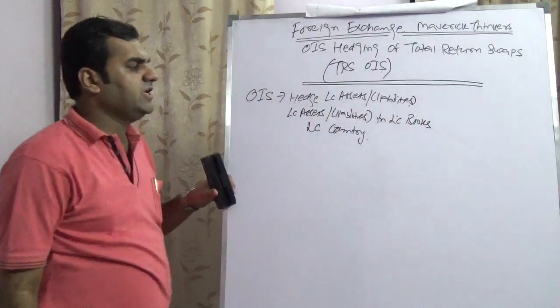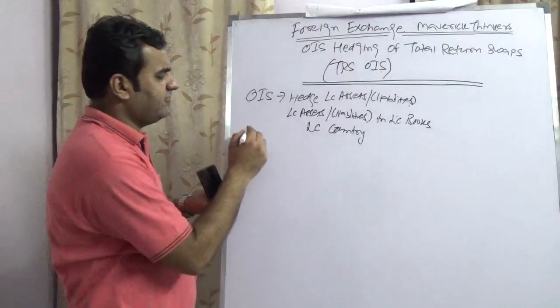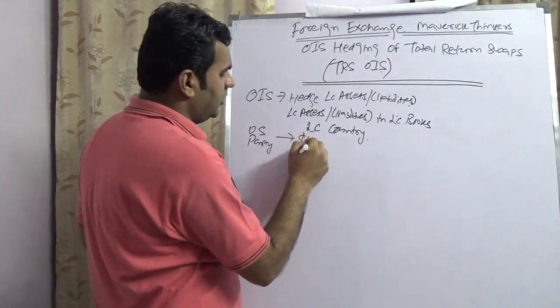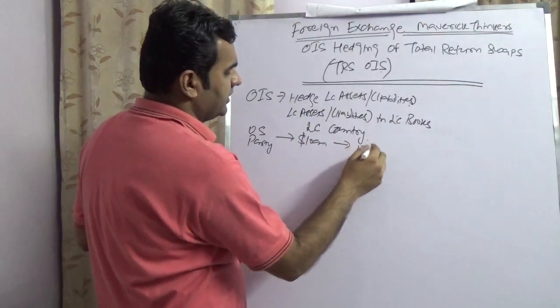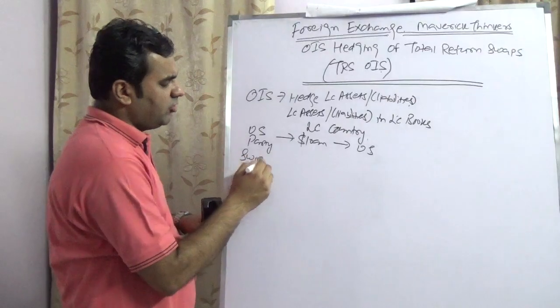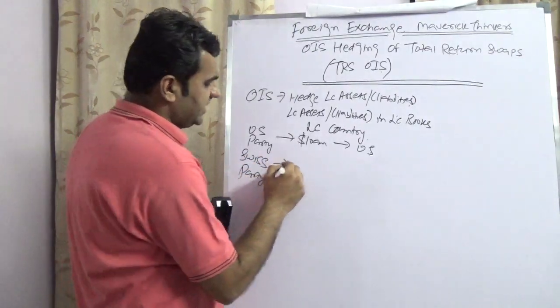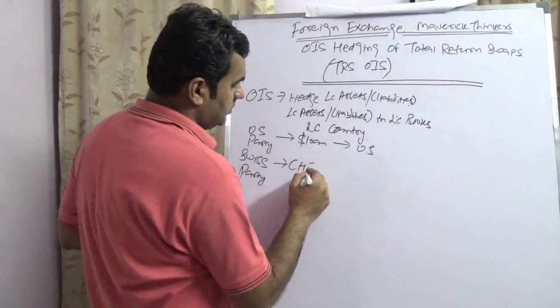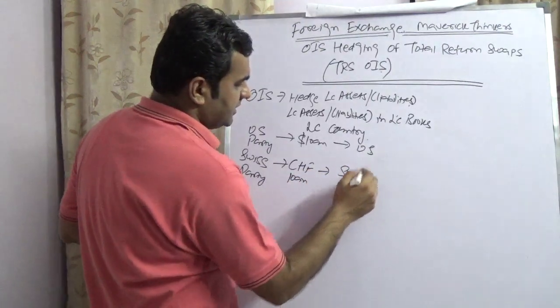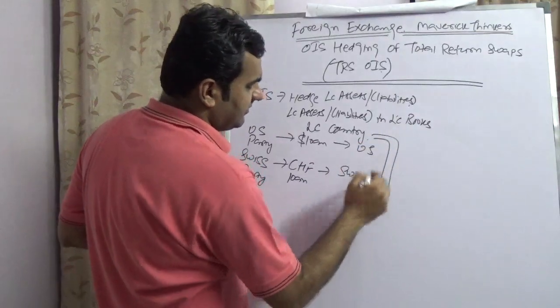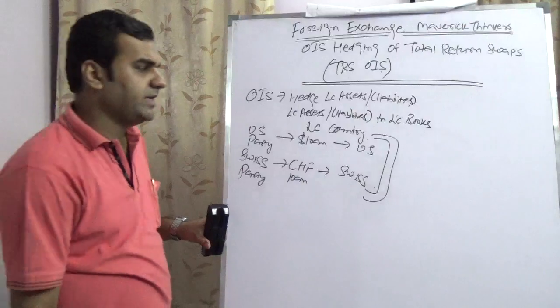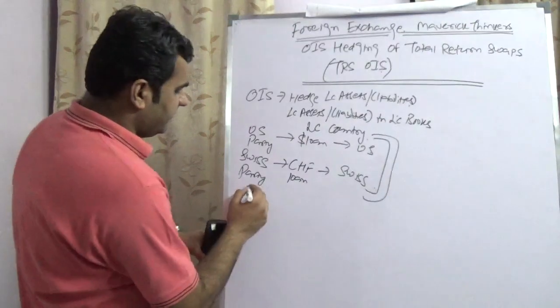Basically, overnight index swap is when a US party wants to hedge a dollar loan in US, or when a Swiss party wants to hedge CHF loan in Switzerland. Both are prime examples of what is known as overnight index swap.